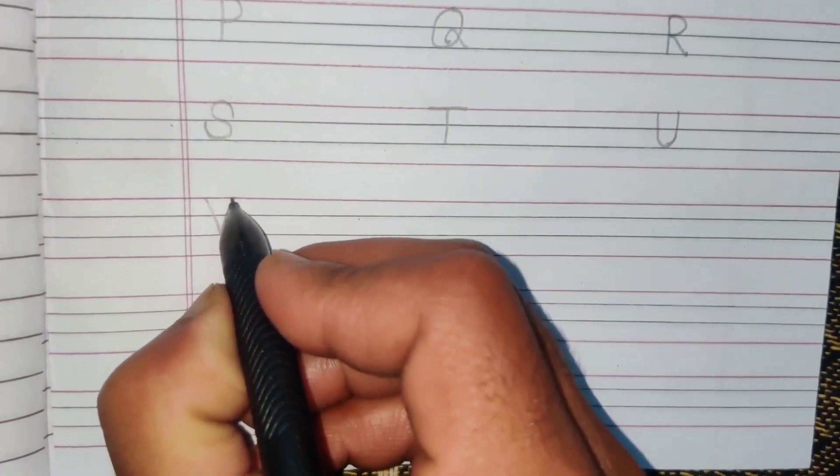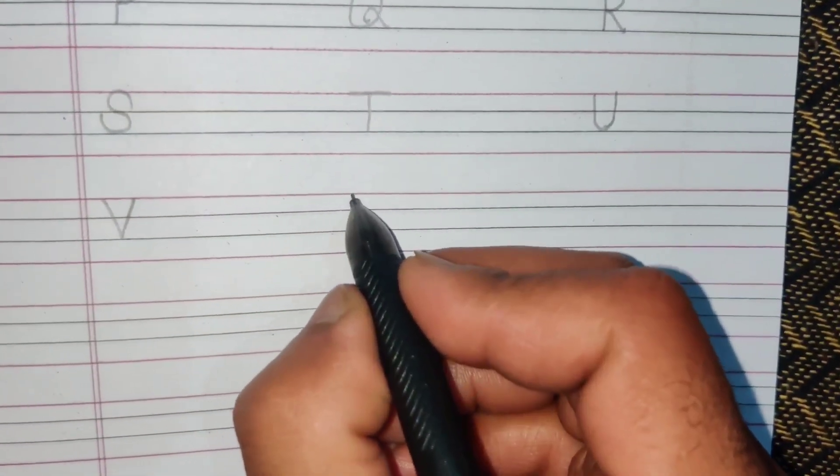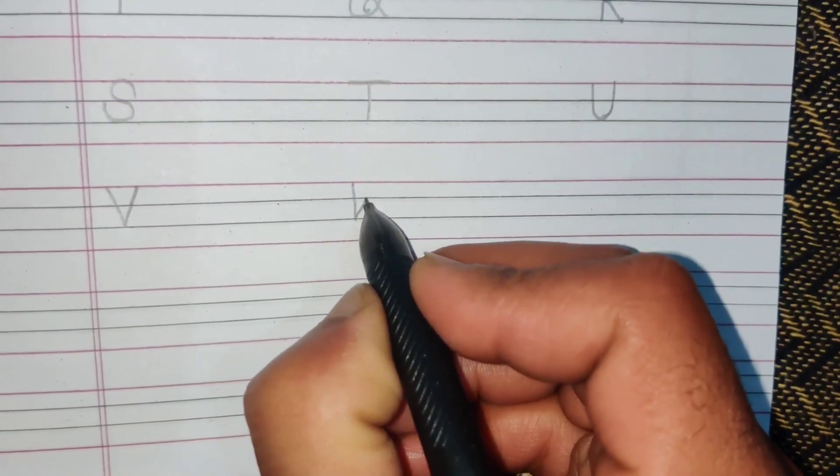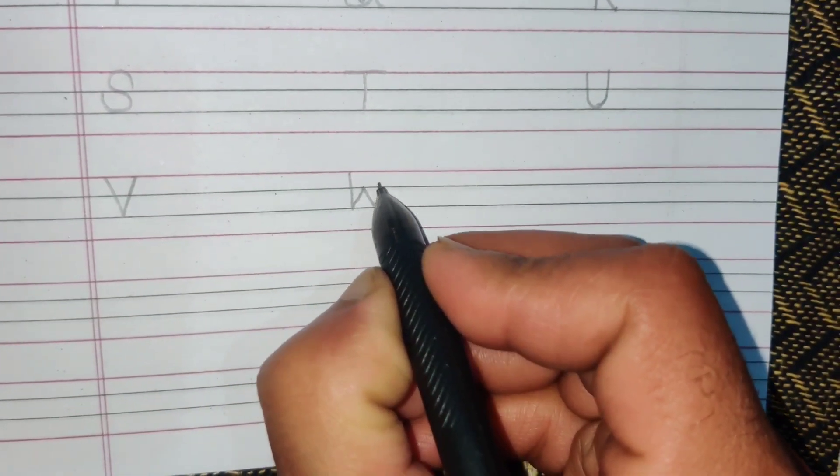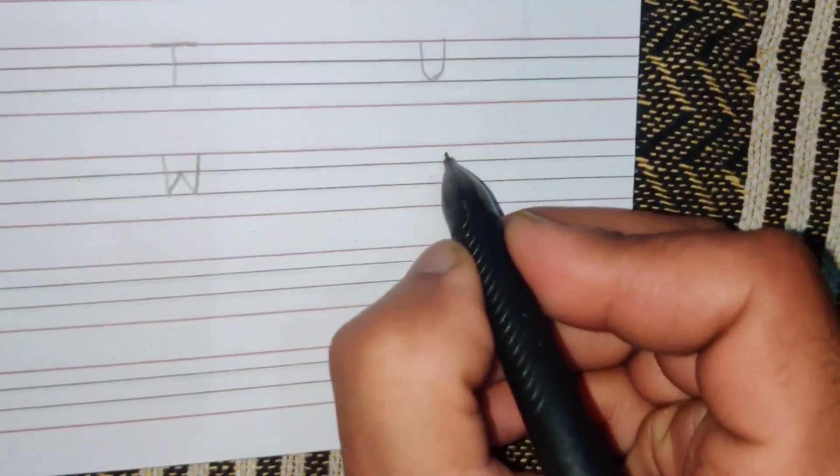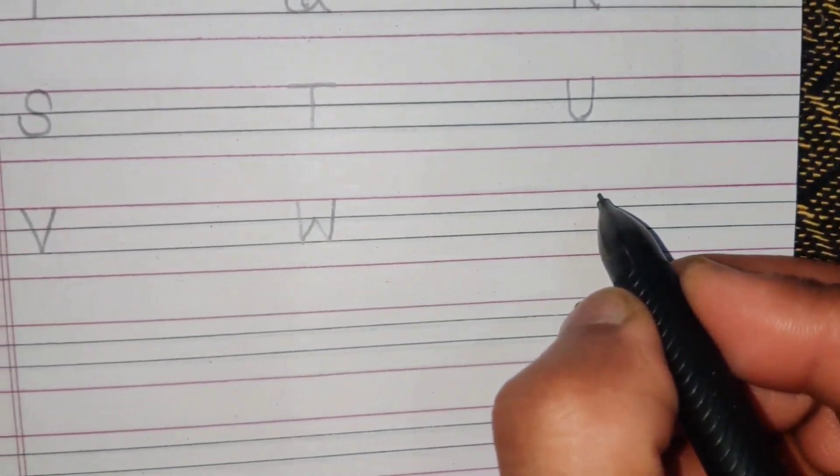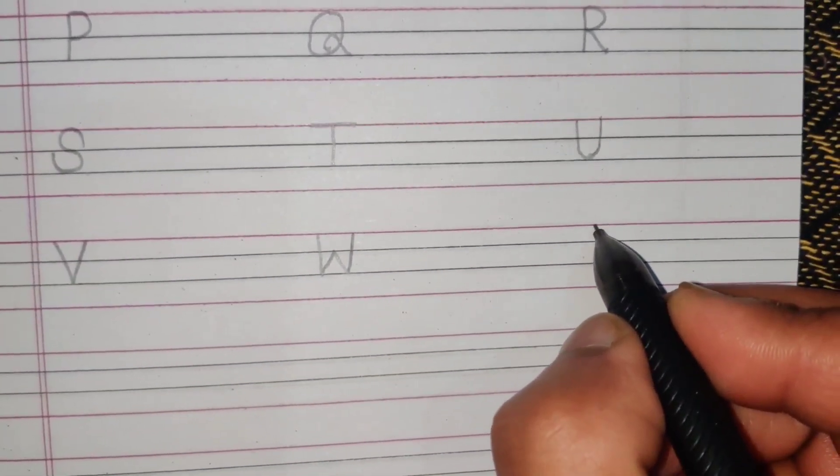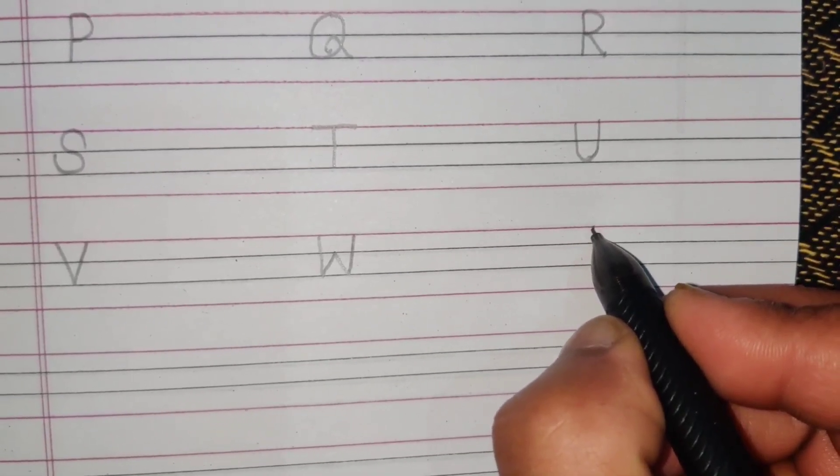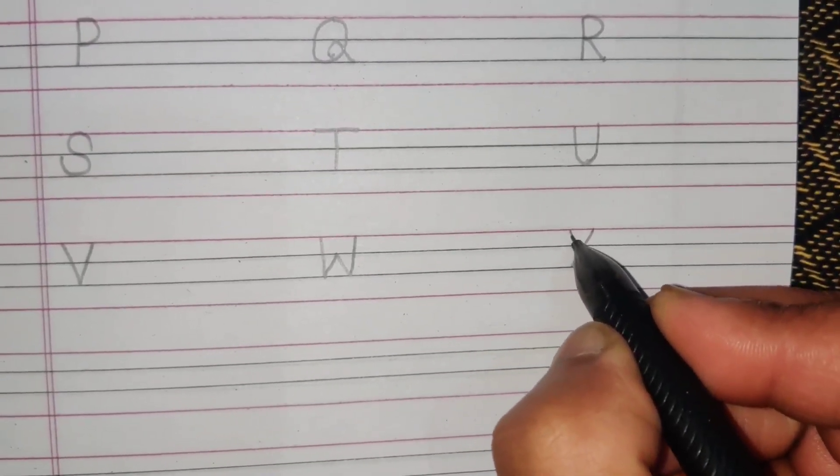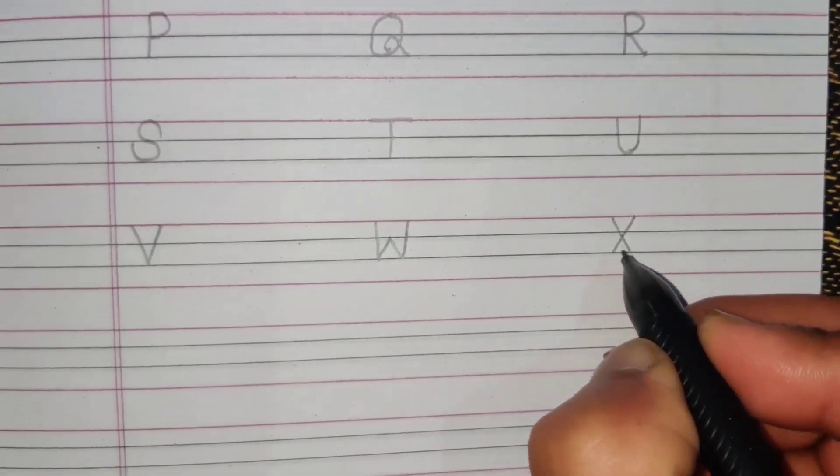V for van. W for watch. X for xylophone.